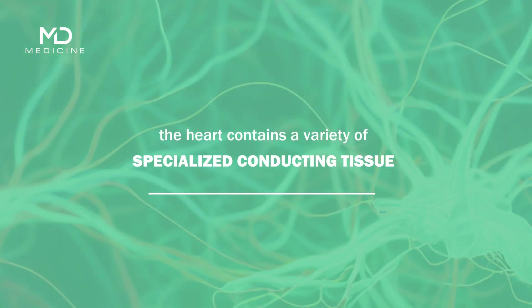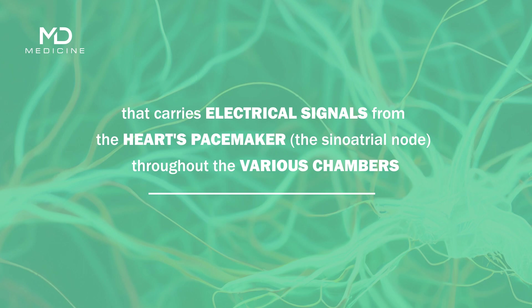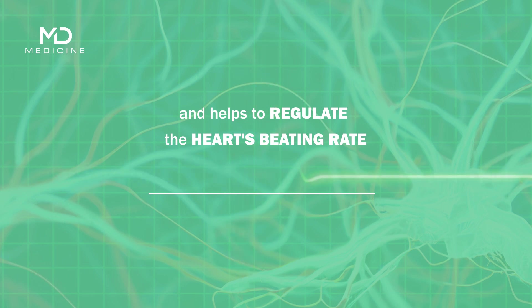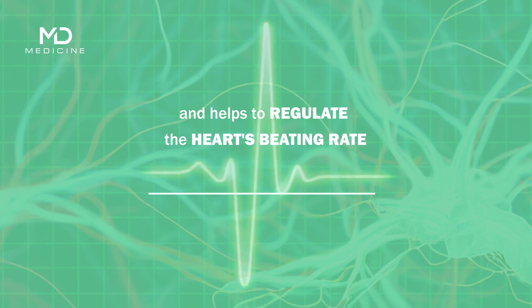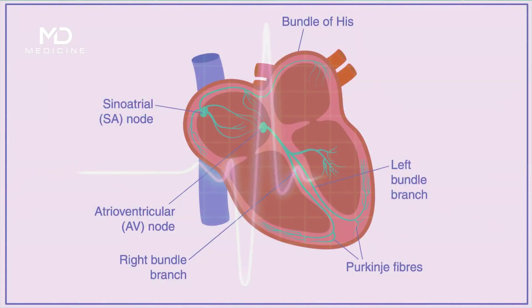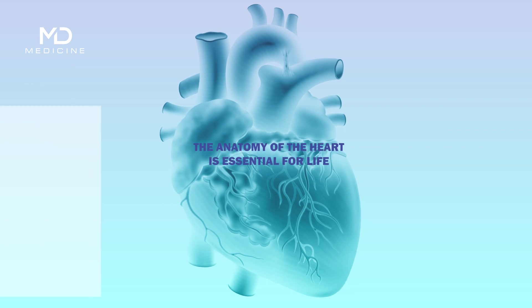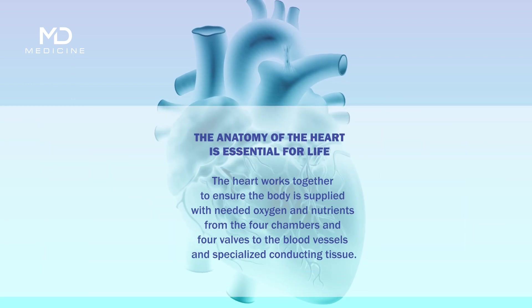Finally, the heart contains specialized conducting tissue that carries electrical signals from the heart's pacemaker, the sinoatrial node, throughout the various chambers to help regulate the heart's beating rate. This specialized conducting tissue includes the atrioventricular node, the bundle of His, the Purkinje fibers, and the atrioventricular bundle.